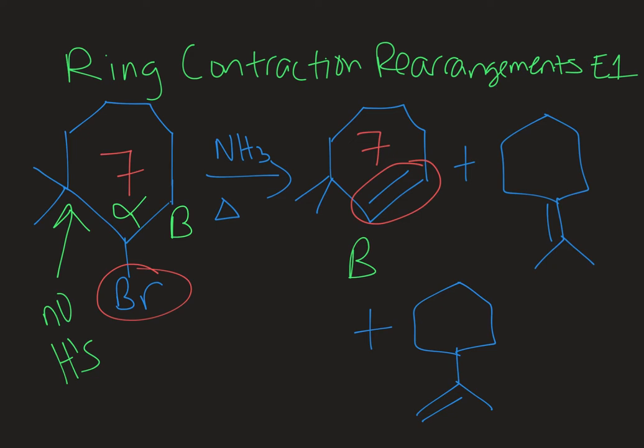But in addition to that I have two other products and those products look different in that they have six-membered rings instead of seven-membered rings. When you have a product that has a different skeletal structure than the starting material you definitely had a rearrangement, and in this case we see the ring shrinks from seven to six members so this is a ring contraction type rearrangement.